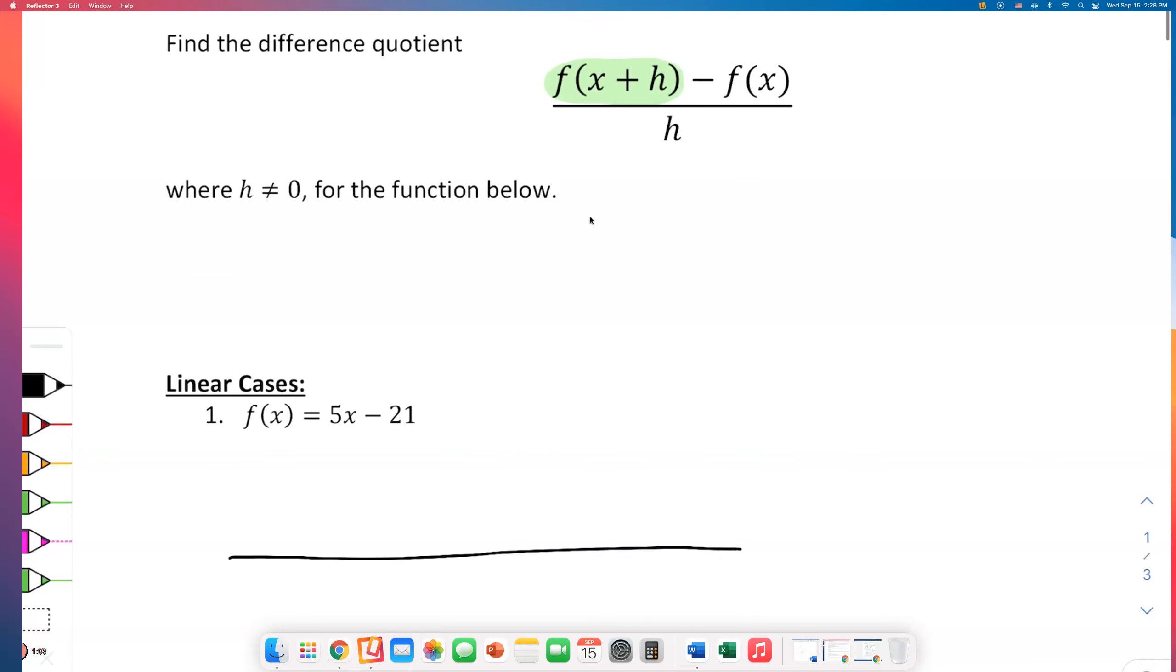When I set up this, I will draw a long fraction bar. Now take a look. I'm gonna substitute x plus h into this function. The original function was 5x minus 21. Instead of 5x minus 21, I'm going to substitute in x plus h. Where you originally had x, replace this x with x plus h.